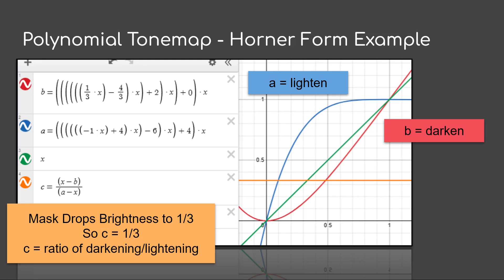We can check to see if our Tone Mapper actually satisfies the mask by doing a simple divide. So we'll take X minus B, or X minus the Darkening Curve, and we'll divide that by the A, the Lightning Curve, minus X. I.e., what we're looking at is how much do we shift in the Darkening divided by how much do we shift in the Lightning.